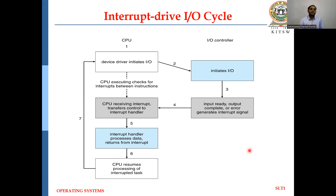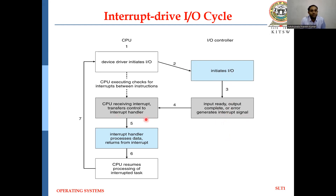This is generally how the interrupt-driven I/O cycle works: when the CPU device drivers initiate I/O, the I/O controller initiates the I/O operation. Then, input ready, output complete, or error signals are generated. The CPU receives the interrupt and transfers control to the interrupt handler. The interrupt handler processes the data and returns from the interrupt. Then the CPU resumes processing of the interrupted task, and the device driver again initializes its I/O.